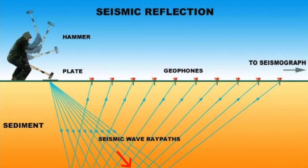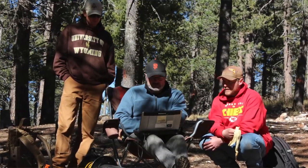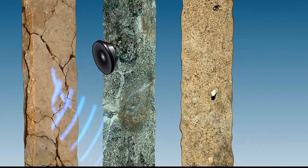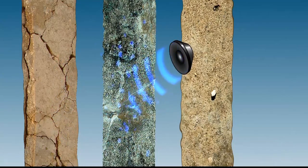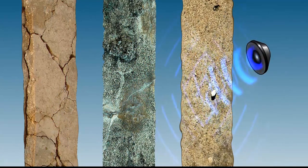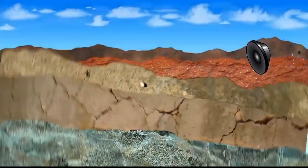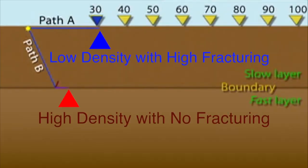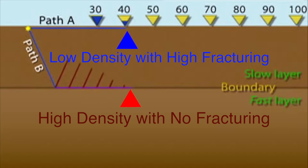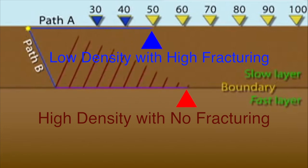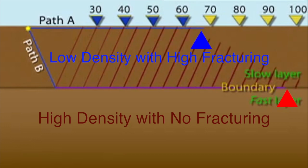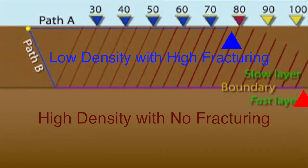Based on the length of time the waves take to return to the surface, scientists can determine the depth and position of different layers of rock. They can detect differences in rock density, and they can map how much rocks below the surface have fragmented or otherwise degraded. For example, layers of rock with low densities and lots of fractures result in slower return times. In contrast, layers of rock with high densities and no fractures result in much faster return times.